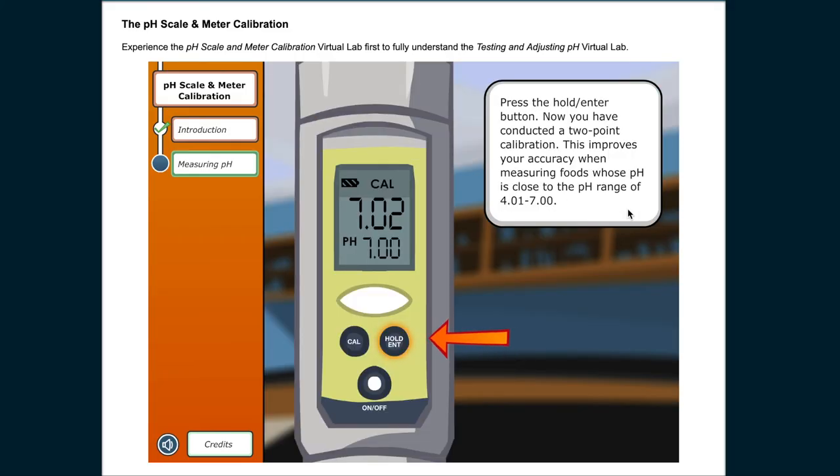Press the hold enter button. Now you have conducted a two-point calibration. This improves your accuracy when measuring food whose pH is close to the pH range of 4.01 to 7.00.